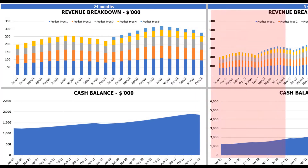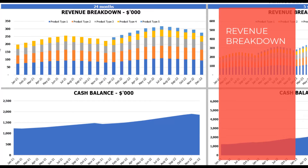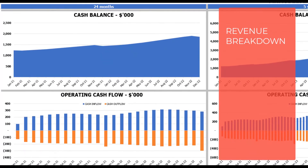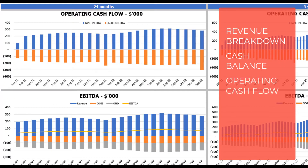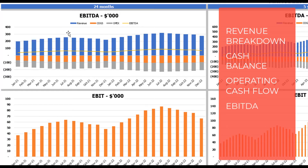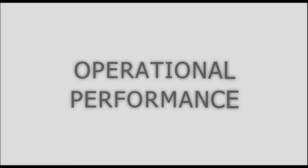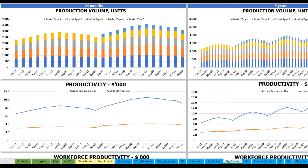On the financial charts tab, you can see the main financial outputs in graphical form — on the left side charts for 24 months and on the right side charts for five years or 60 months. The top charts show revenue breakdown by product types. The next charts show cash balance for two years and five years. Then operating cash flow broken down by cash inflow and outflow. Next is the EBITDA breakdown showing revenue, COGS, and OpEx, with the resulting EBITDA value as a yellow line. Finally, the last charts show the EBIT value by month.